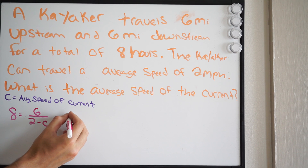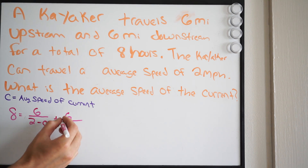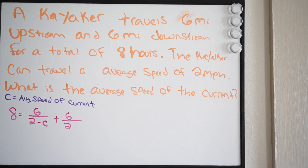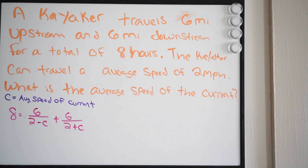Then we have to take into account going downstream. So plus 6 miles downstream, and his average speed was 2. But if he's going downstream, he's going with the current so his speed will naturally increase. So we say 2 plus C. And this is now done — your equation is now complete: 8 equals 6 over (2 minus C) plus 6 over (2 plus C). Now we can go ahead and solve.